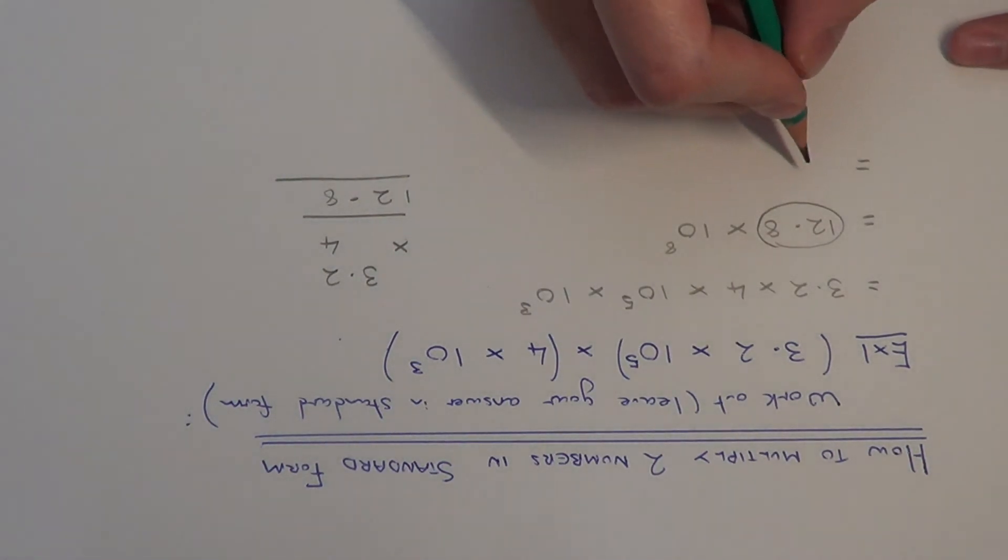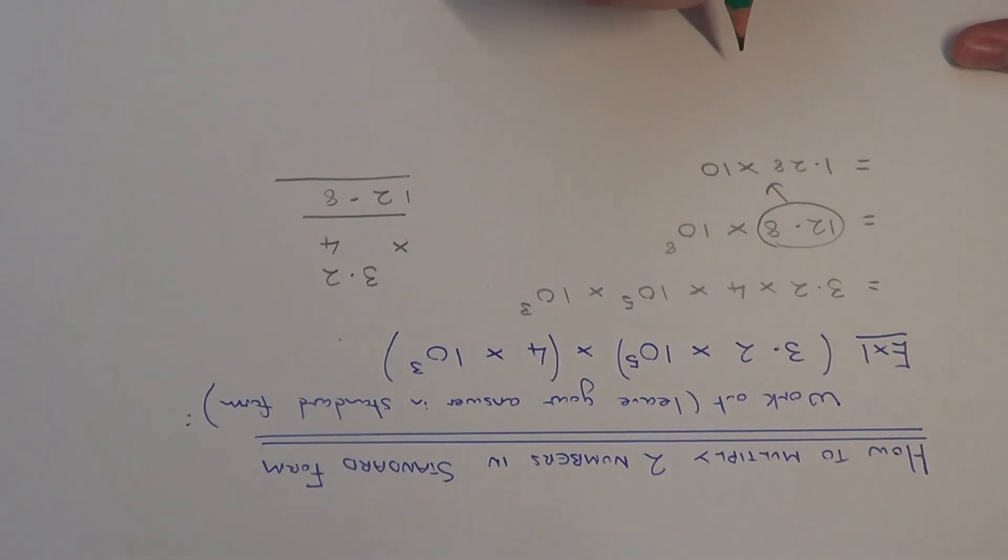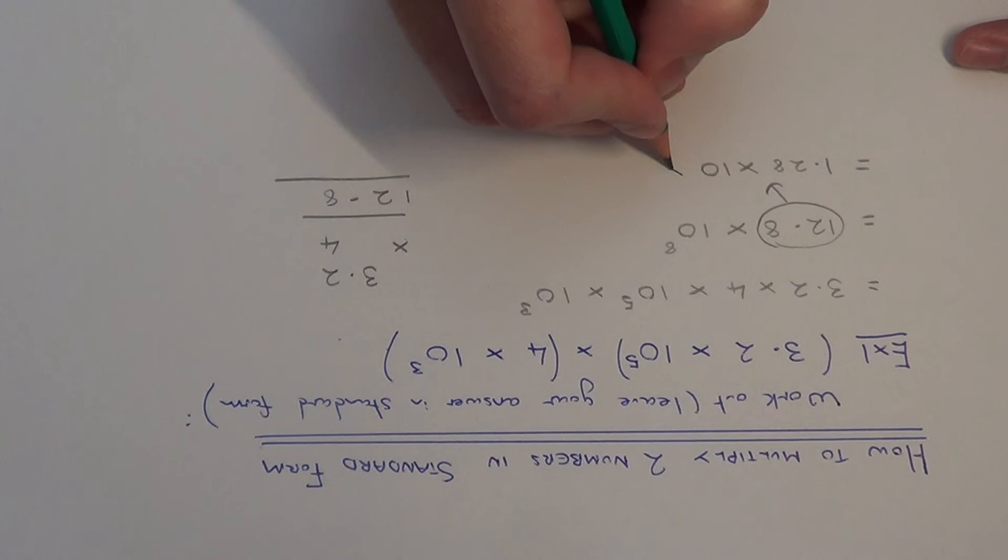So we need to rewrite the 12.8 as 1.28 times 10. So that will give us 12.8. And then we've still got the times 10 to the power of 8 bit at the end.